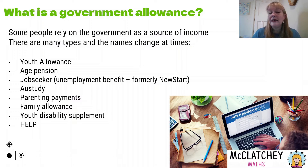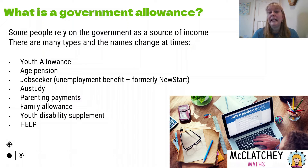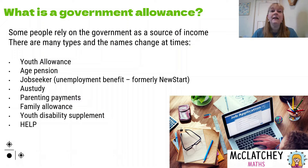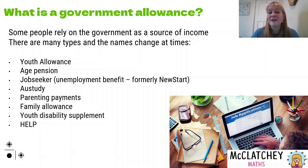JobSeeker used to be called Newstart Allowance until COVID hit and then the name changed — so as you can see, the names do change over time. We've got something called AusStudy, which is available to students typically at university and allows them to have their university fees or extra living expenses covered. Parenting payments are paid typically to single parents. We've also got family allowance, paid to families who don't earn over a certain amount. We've got the disability supplement for young people and also for older people.